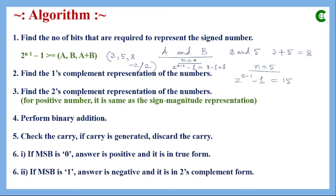After discarding or ignoring the carry, we check the remaining bits of the result. Among those bits, we check the MSB. If the MSB is 0, the result is positive and is in true form — the same as we saw in one's complement arithmetic. But if the MSB is 1, the answer is negative and it is in two's complement form. In that case, we find the two's complement value of that result to get the actual magnitude, unlike one's complement where we found the one's complement of the result.